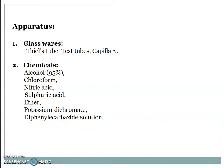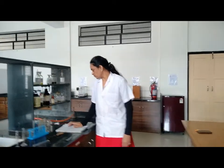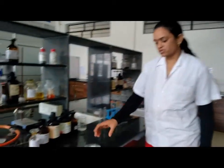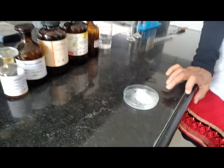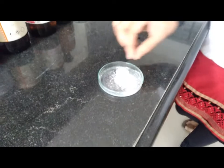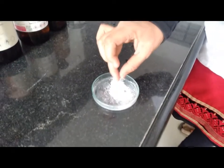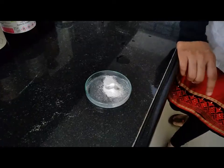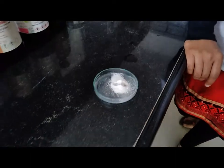Now let's move to the laboratory for the actual practical. Today we are going to deal with the identification test for the organic sample of promethazine hydrochloride as per Indian Pharmacopeia. This is our promethazine hydrochloride sample — it is a white colored crystalline powder and it is almost odorless.